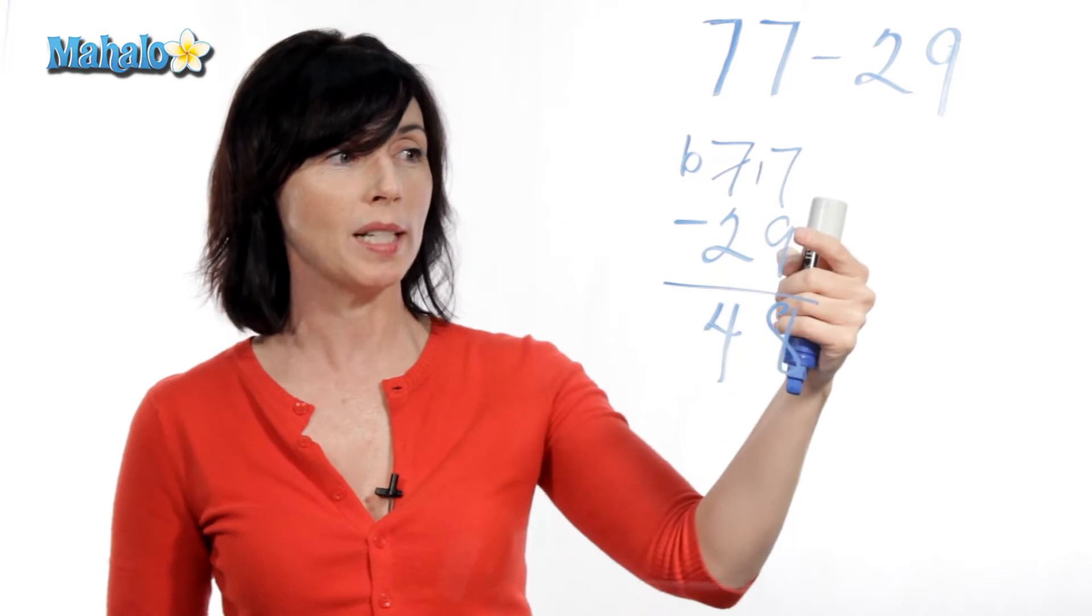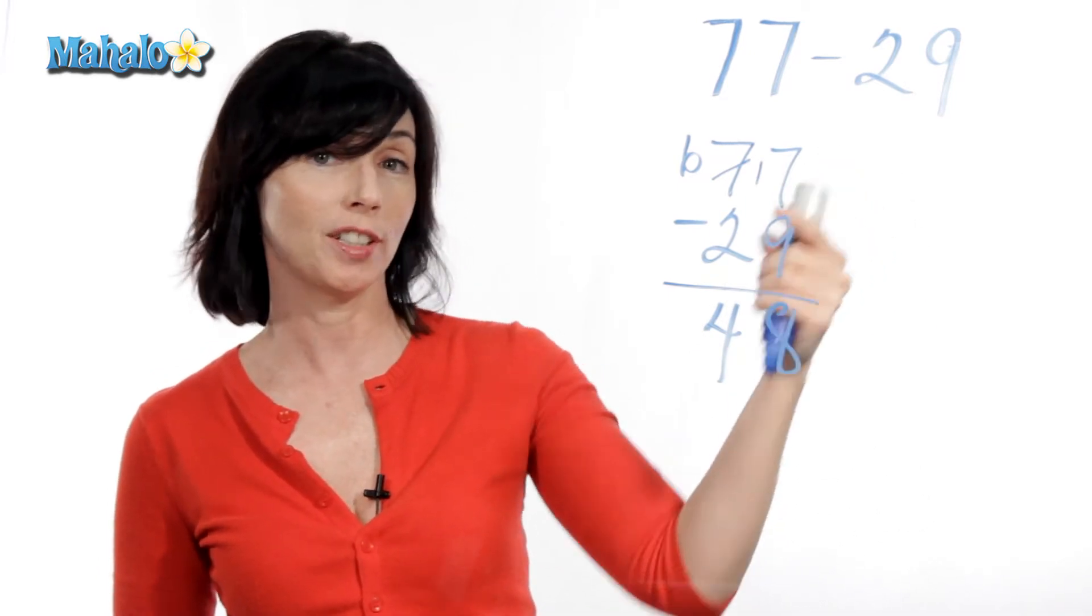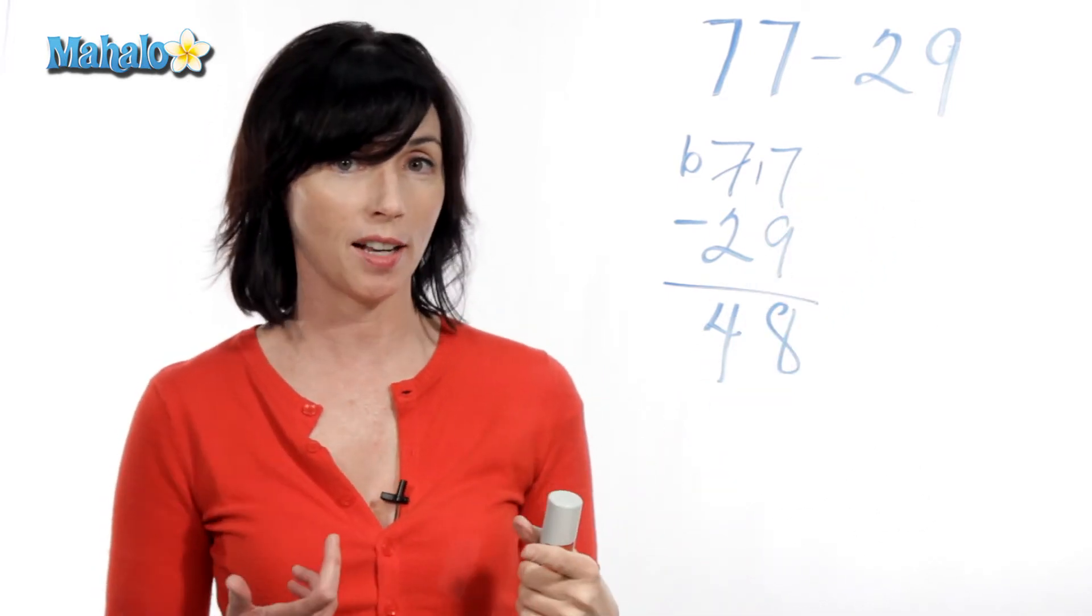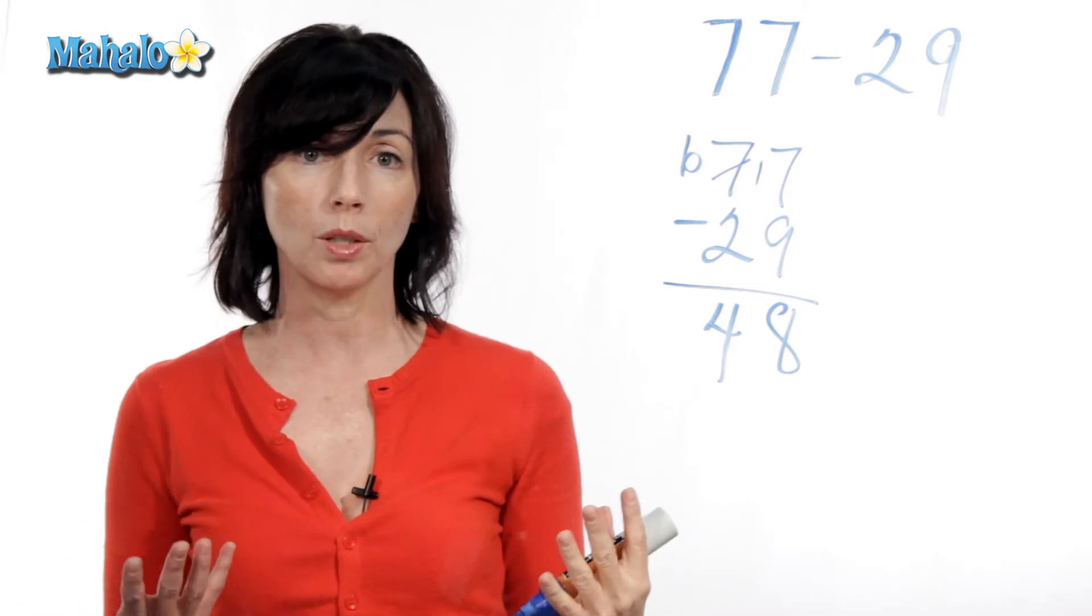Now if you're not sure if you got it right, you can always add these two together and you should get 77. That's a good way to check. So let's take another look at it with maybe three digits.